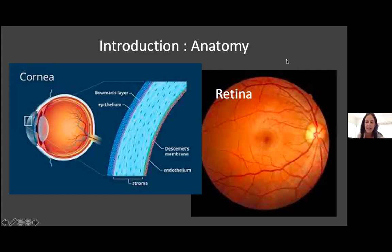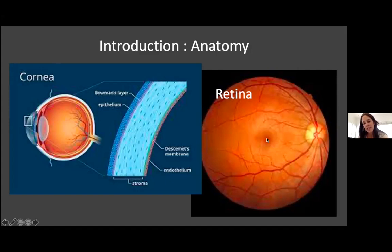On the retina, we have the posterior pole — the most important part — which has the optic disc, the most anterior part of the optic nerve, from which we get our arteries and veins. These form vascular arcades, in the center of which we have the macula, where we have the highest density of cones. This gives us color vision and fine definition vision, whereas the optic disc contributes to our peripheral vision.